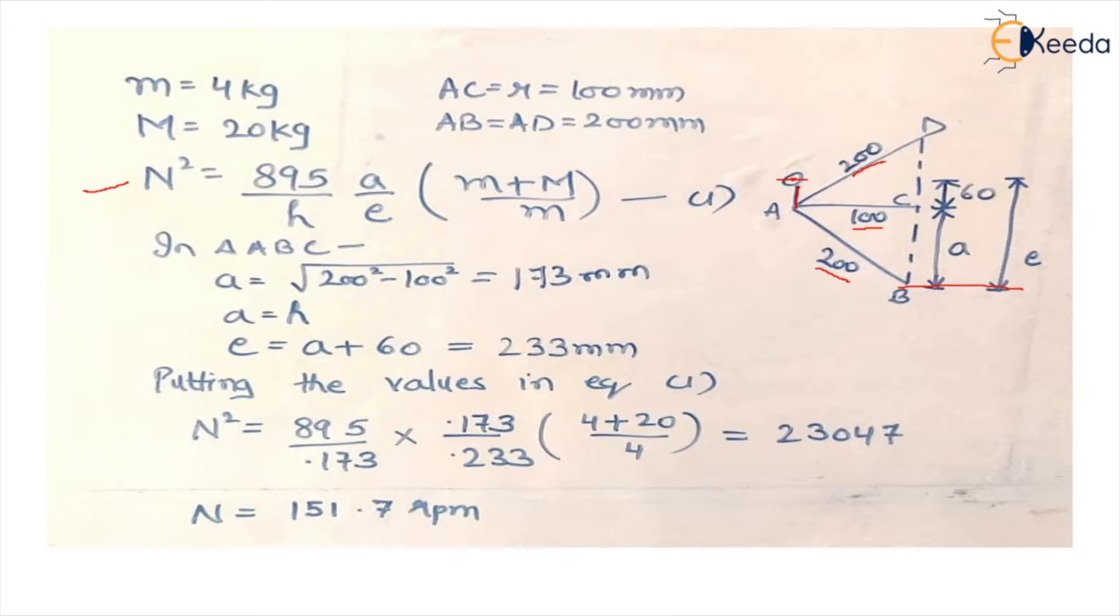Mass of ball is given, mass of sleeve is given. In this triangle ABC if we apply the Pythagoras theorem we can get the value of A which is 173 mm.